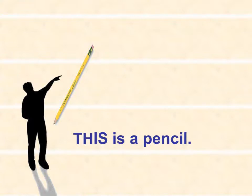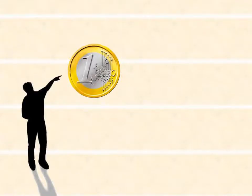So if the object is near to us, we use this. Now what is this? Yes, a coin. So what do we use here? This. Why? Because it is near. So this is a coin.